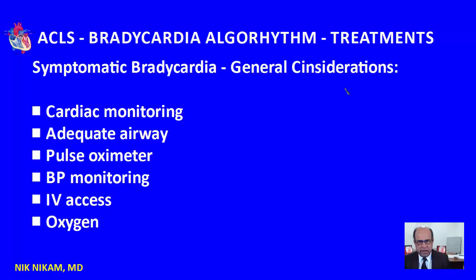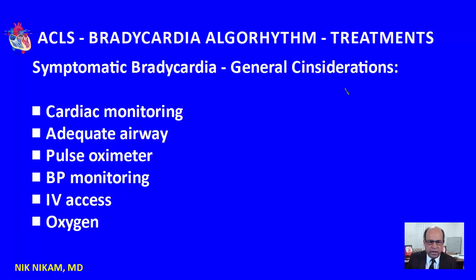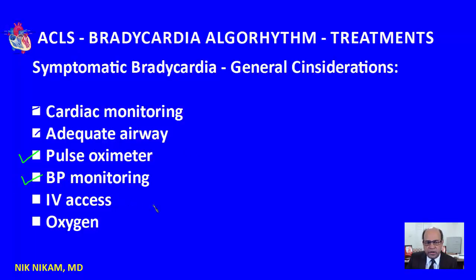Let's talk about symptomatic bradycardia — some general considerations. When you are standing beside a patient in an intensive care unit whose heart rate is, say, 42 per minute and the patient has all those symptoms, you need to immediately start cardiac monitoring, ensure the patient has an adequate airway, ensure the pulse oximeter is in place for peripheral oxygenation level, have good blood pressure monitoring, establish IV access to administer medications, and provide oxygen to improve overall oxygenation.